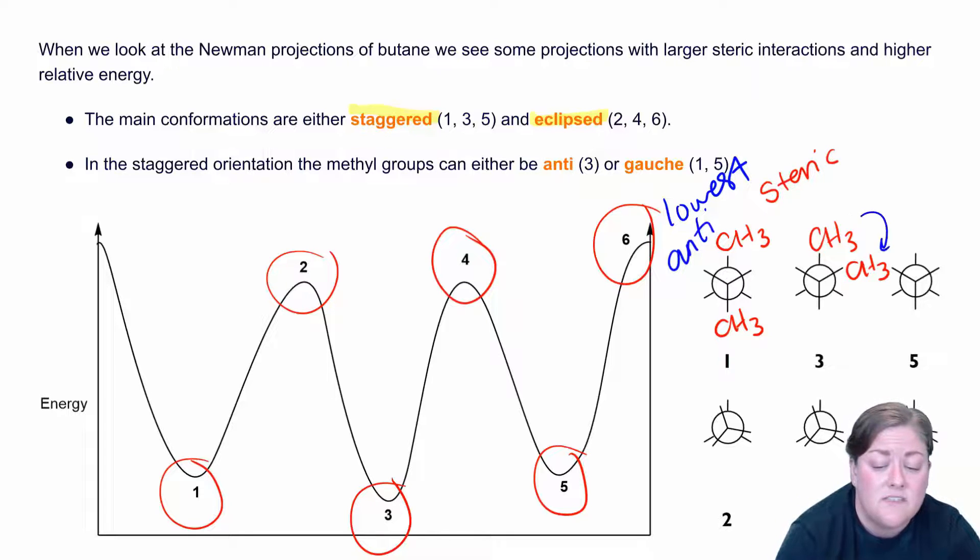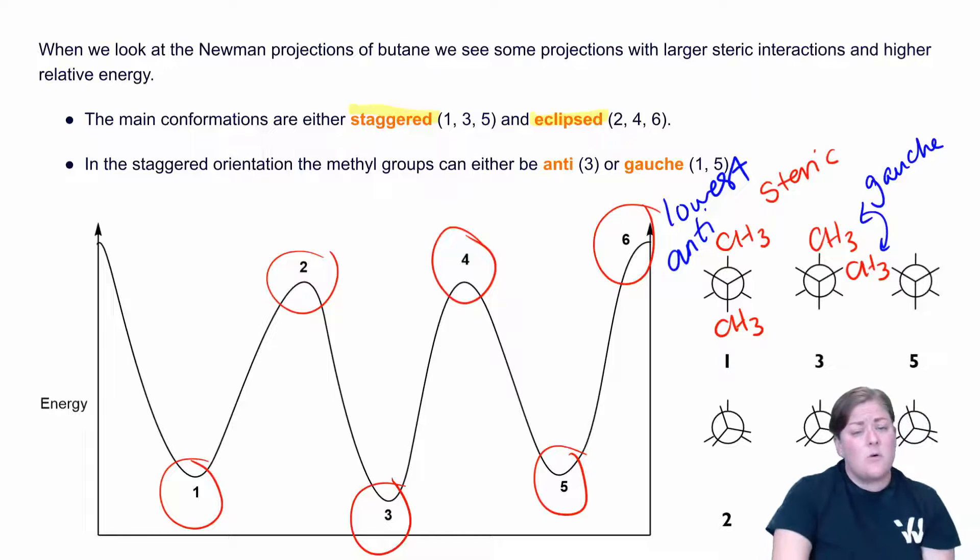And I can have these two groups 60 degrees apart from each other. This is called gauche. And this is lower energy, but not as low energy as the anti.